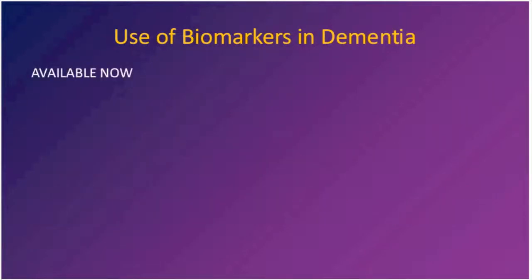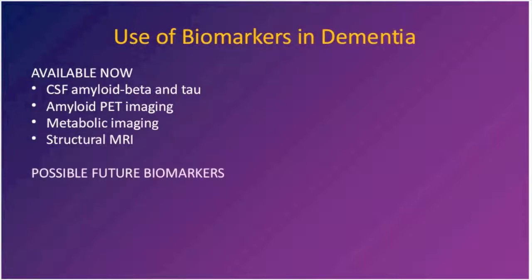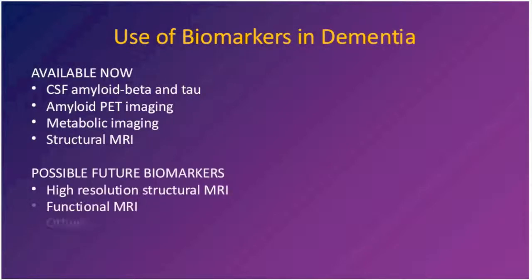The kinds of biomarkers available right now — and I'll talk about all of these today — include cerebral spinal fluid measurements of two proteins, amyloid beta and tau; amyloid PET imaging; metabolic imaging; and structural MRI. There are also a number of exciting future biomarkers being developed, including high resolution structural MRI, functional MRI, and a number of other novel approaches that researchers are actively studying.